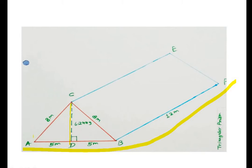So, area of triangle is equal to 1/2 × base × height. Use the simple Pythagoras theorem, and we get CD = 6.2449 meter.